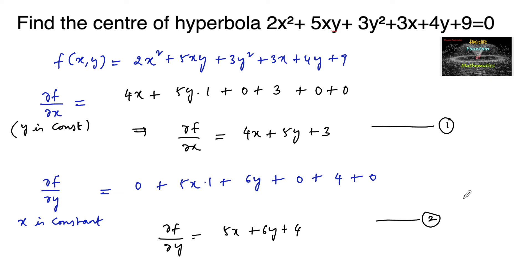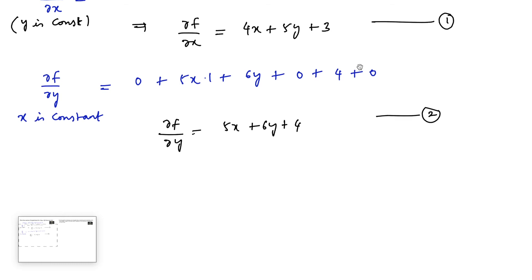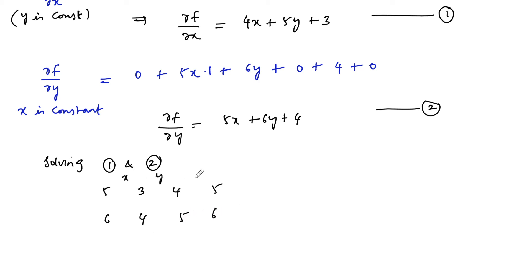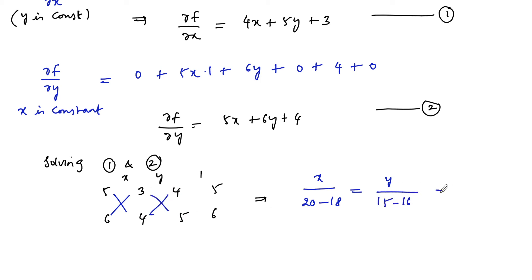Call ∂f/∂x = 0 as equation 1 and ∂f/∂y = 0 as equation 2. By solving these two equations we get the center of the conic. Solving by cross multiplication: using coefficients [4, 5, 3] and [5, 6, 4], we compute x/(5×4 − 6×3) = y/(3×5 − 4×4) = 1/(4×6 − 5×5), which gives x/(20 − 18) = y/(15 − 16) = 1/(24 − 25).